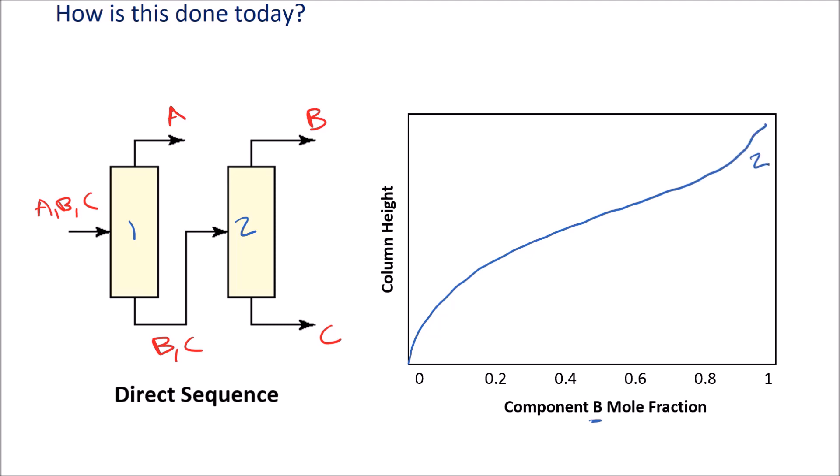This is just a binary mixture by the time we get to column two. But now if we were to look at column one, it looks quite different. It would look something like this for column one, where we actually have a higher concentration of B here in the middle of the column.